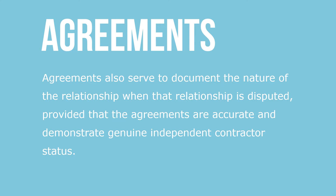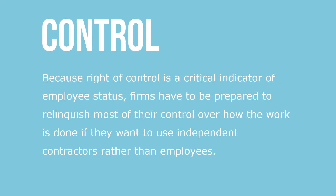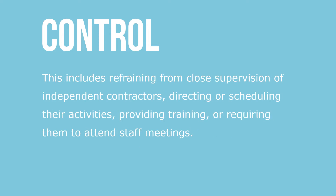Because right of control is a critical indicator of employee status, firms have to be prepared to relinquish most of their control over how the work is done if they want to use independent contractors rather than employees. This includes refraining from close supervision of independent contractors, directing or scheduling their activities, providing training, or requiring them to attend staff meetings.